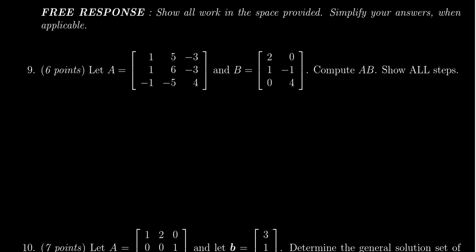In this video we present the solution to question number nine from the practice midterm exam number two for Math 2270. We're given two matrices A which is three by three and B which is three by two, and we're asked to compute the product A times B. Since we have a three by three matrix multiplied by a three by two matrix, we have a legitimate product, and the product is going to be a three by two matrix when we're done.